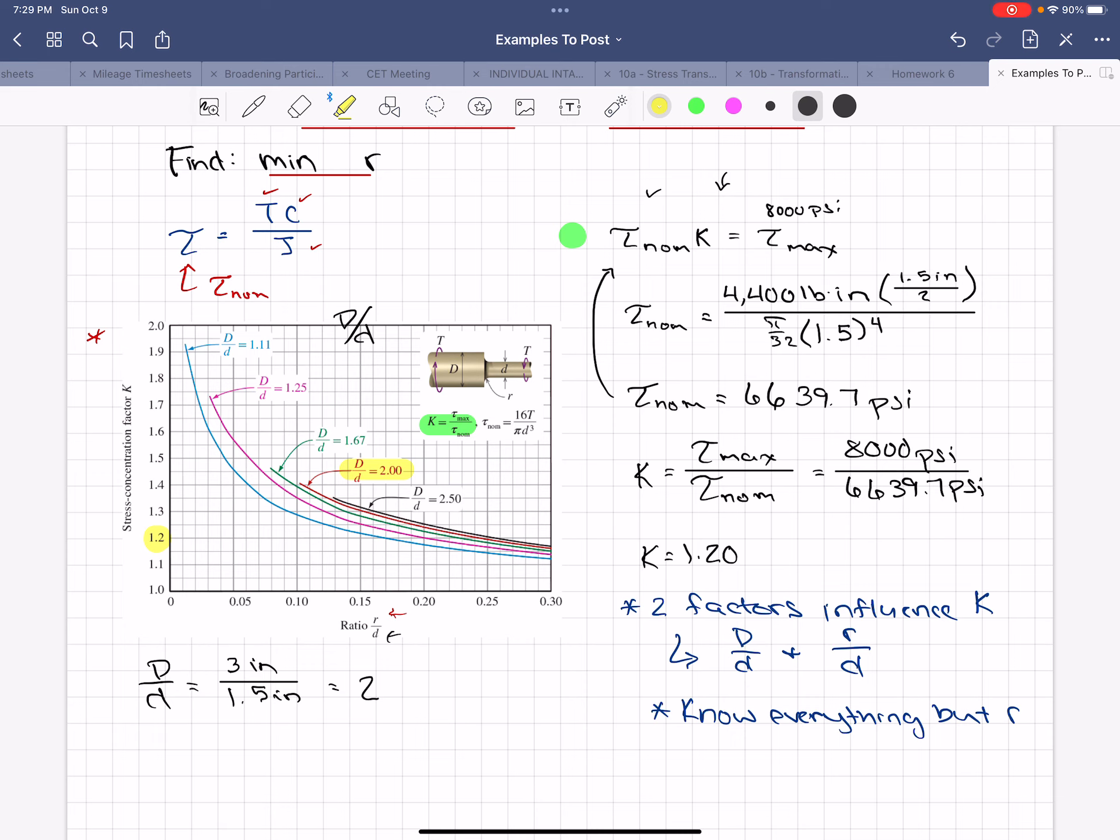Okay, so that's really all we need to know to then draw a line from our k of 1.2 over until we hit that red line. It symbolizes big D over little d, and then we get an r over d. We come down here, we're right about here, and we're going to say that that's about 0.238.